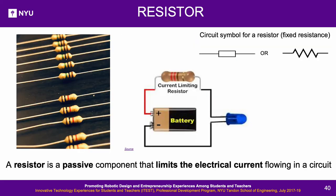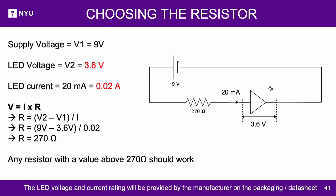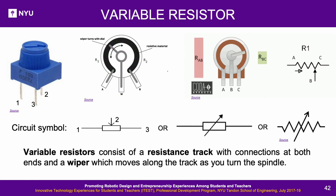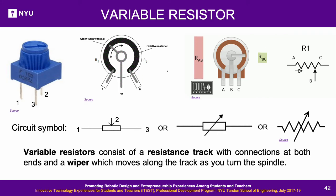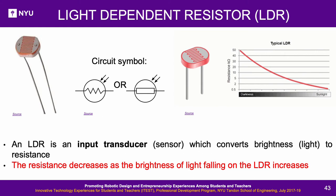A resistor is a passive component that limits electrical current in a circuit. The value of resistor to use should be calculated based on the rating of the component being used — the supply voltage and current rating can be found in the datasheet of an LED or other component. Variable resistors allow resistance to be changed in real time using a wiper that moves along a resistance track. A light-dependent resistor (LDR) changes resistance in proportion to light in the surroundings — its resistance decreases as brightness increases.